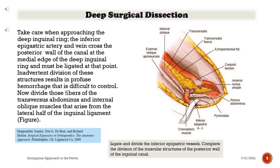Take care when approaching the deep inguinal ring: the inferior epigastric artery and vein cross the posterior wall of the canal at the medial edge of the deep inguinal ring and must be ligated at that point. Inadvertent division of these structures results in profuse hemorrhage that is difficult to control. Divide the fibers of the transversus abdominus and internal oblique muscles that arise from the lateral half of the inguinal ligament, then ligate and divide the inferior epigastric vessels to complete the division.